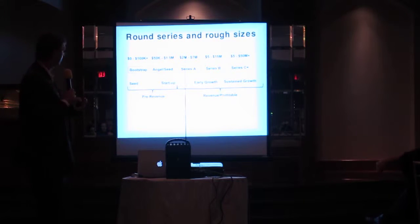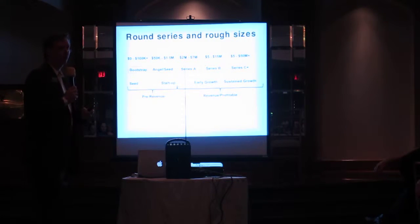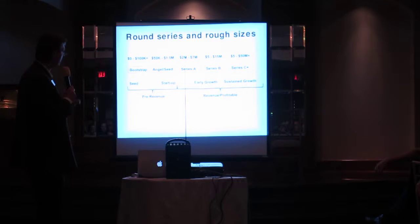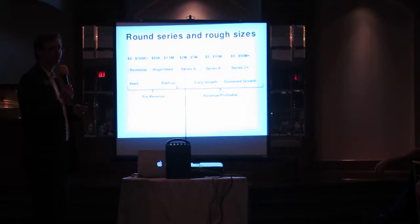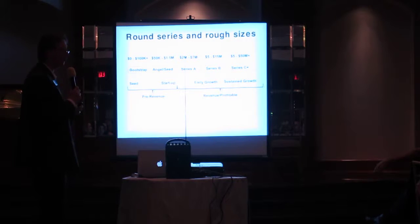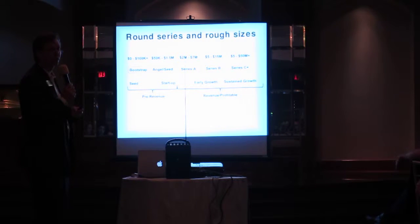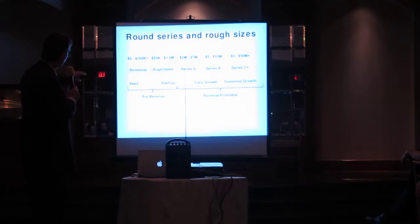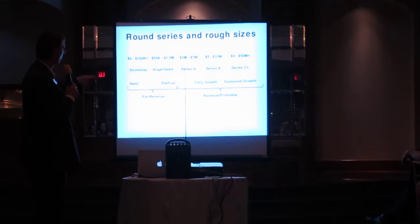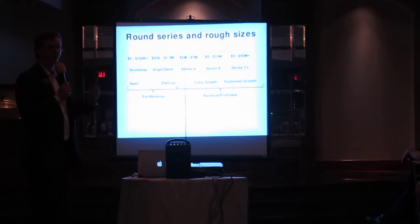What are the amounts of money that flow in these different stages? When you bootstrap, you're typically using somewhere between zero and $100,000. The angel seed round is usually between $50,000 and $1.5 million. A Series A raise is between $2 and $7 million, a Series B is between $5 and $15 million, and a Series C is between $5 and $50 million or more. You can see these aligned with seed stage, startup stage, early growth, and sustained growth, moving from pre-revenue into profitability.